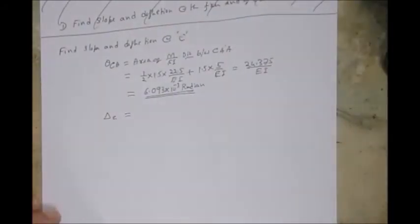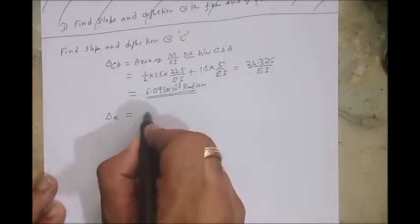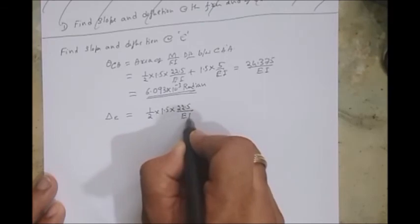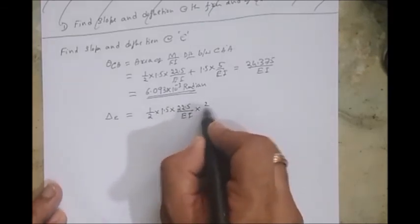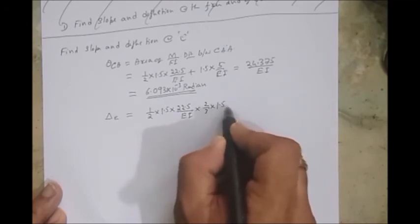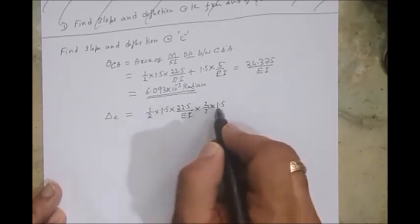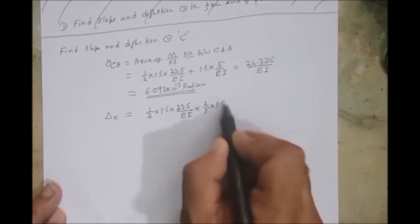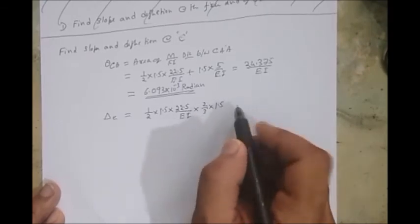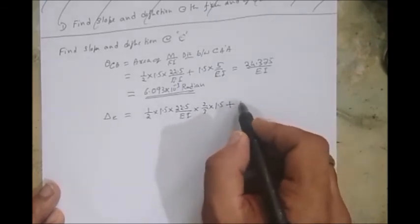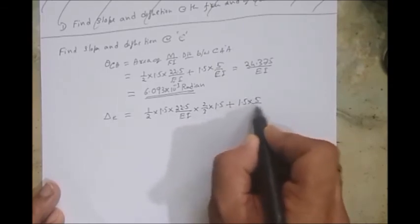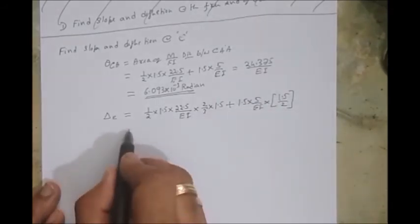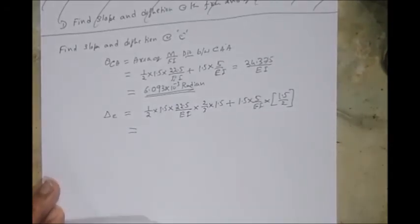So you will get this deflection delta C. What you need to do is half into base into height, same region. Moment is two-third of 1.5. We don't have to multiply with the plus because when you take the CG, this is itself at C. Plus second region, 1.5 into 5 by EI into 1.5 by 2.